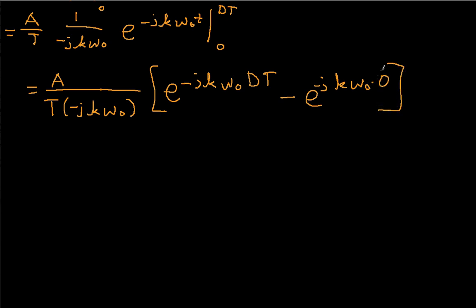Now we can start to simplify things. First off, we have e to the stuff times 0, so it's e to the 0. This guy just becomes 1 because e to the 0 is 1.